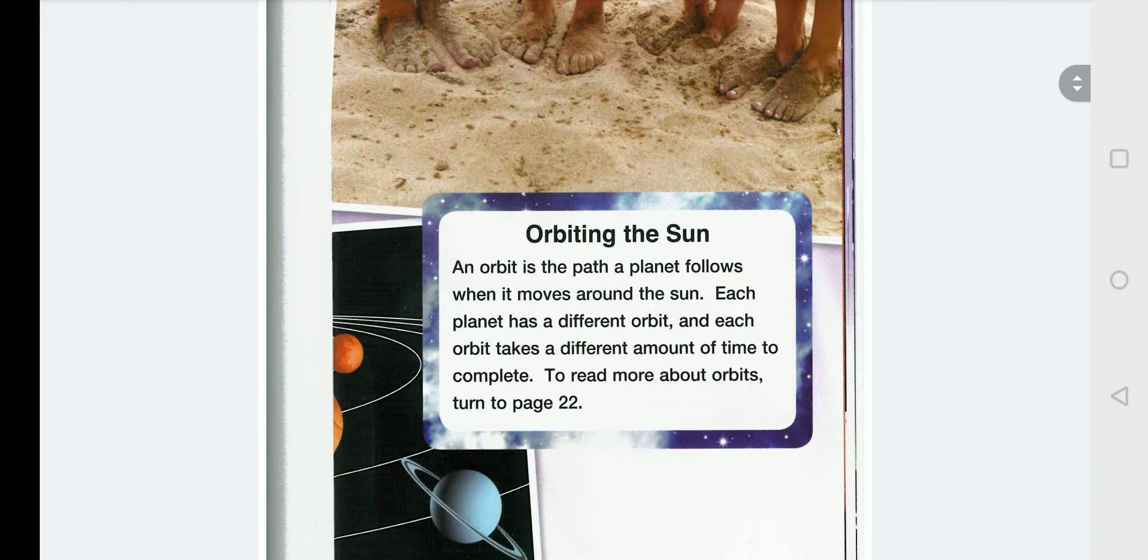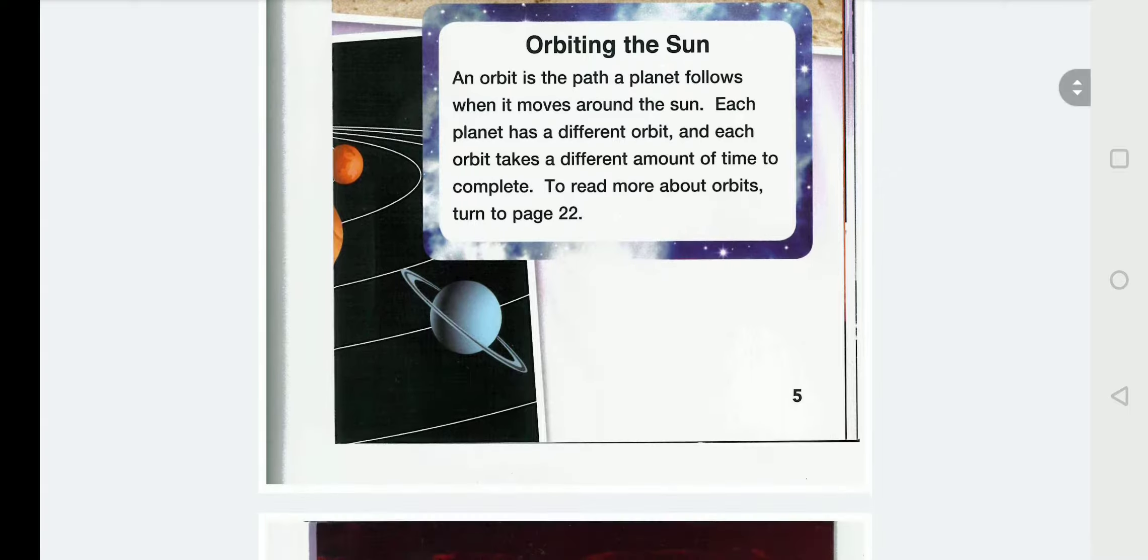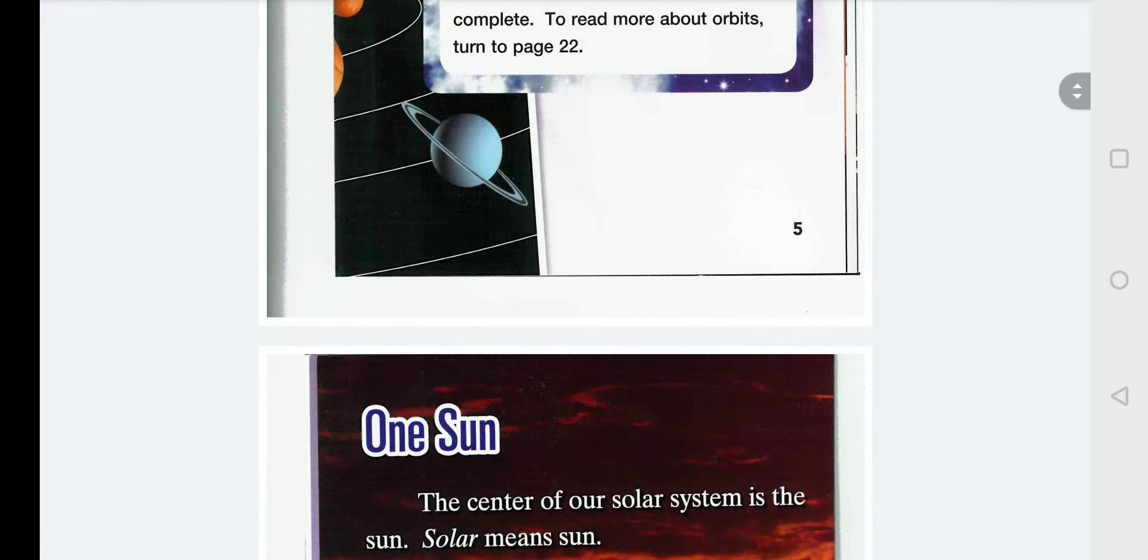Orbiting the sun. An orbit is the path a planet follows when it moves around the sun. Each planet has a different orbit. And each orbit takes a different amount of time to complete. To read more about orbits, turn to page 22. But not yet. We will go to page 6.